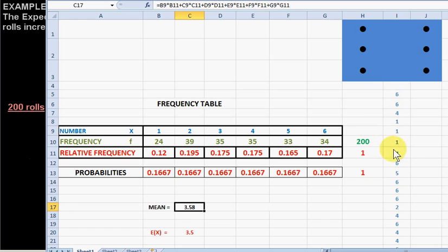We can repeat this simulation. Notice that the mean is actually floating about this value here, 3.5. In general, the mean will get closer and closer to 3.5 as we increase the number of rolls of this die.